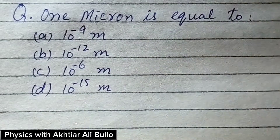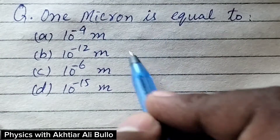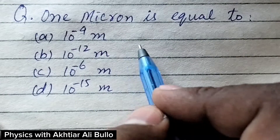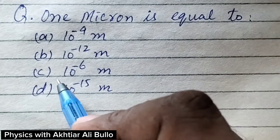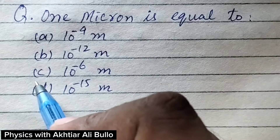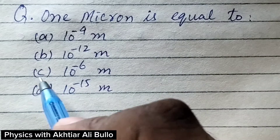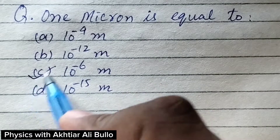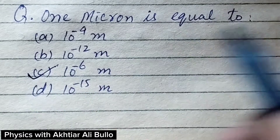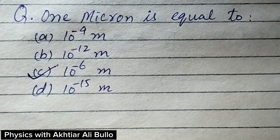1 micron is equal to 10 raised to the power minus 6 meter, so the correct option will be c: 10 raised to the power minus 6 meter.